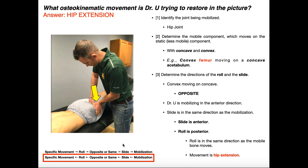From there, we can determine whether the roll and the slide are in opposite or the same directions. We know we're dealing with the hip joint, with the femur and the acetabulum. The acetabulum is concave — remember, it's just a big socket — and then the ball, the head of the femur, is convex.